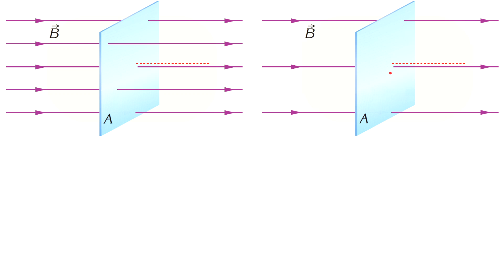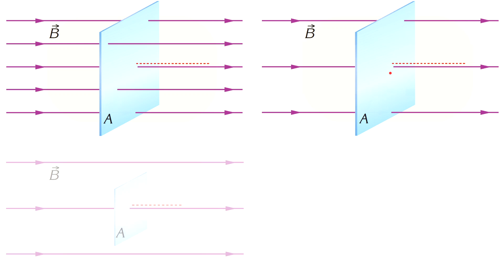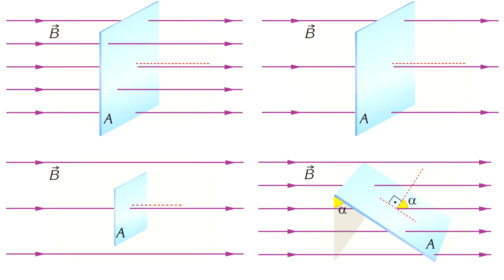If we change the area, the magnetic flux also changes. The angle between the plane and the magnetic field lines also affects the magnitude of magnetic flux. If the plane and the magnetic field lines are parallel, then the magnetic flux through the surface is zero. The magnetic flux is maximum when the plane is perpendicular to the magnetic field lines.